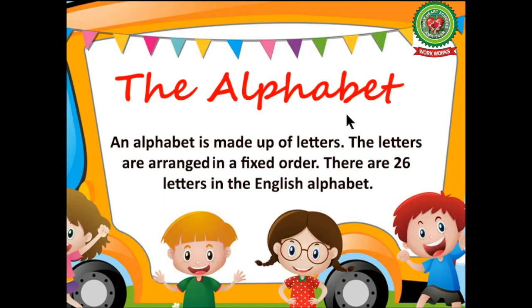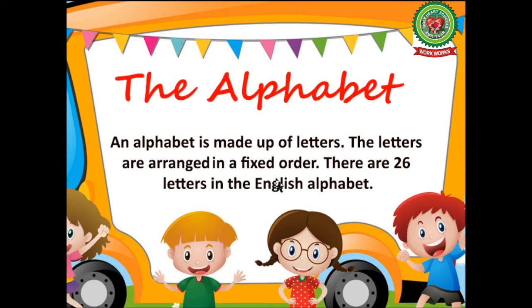Hello kids, welcome to your English class. Today we will discuss a new lesson: the alphabet. I know you have done this already in your previous classes, but let's do this again. So, what is the alphabet? An alphabet is made up of letters. The letters are arranged in a fixed order. There are 26 letters in the English alphabet.